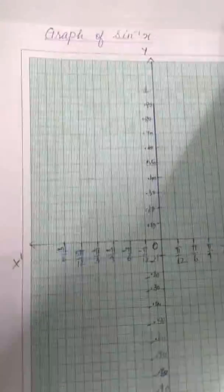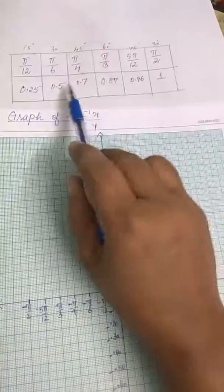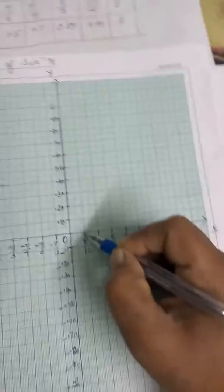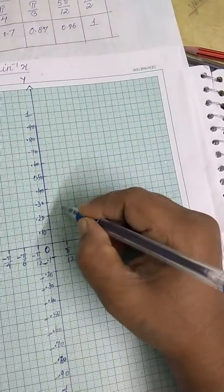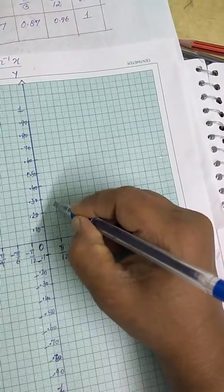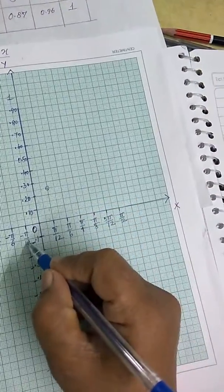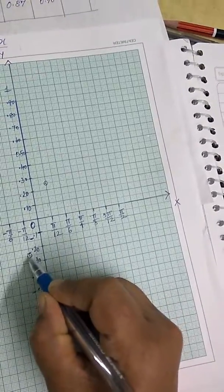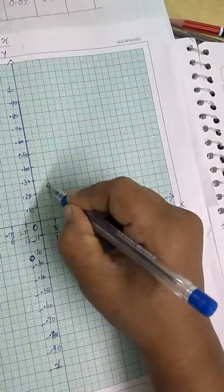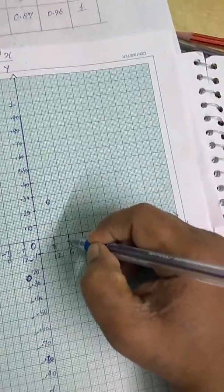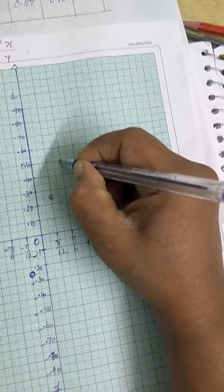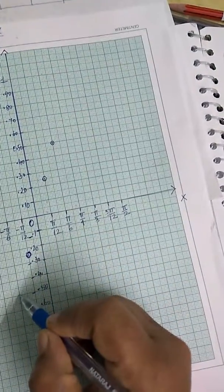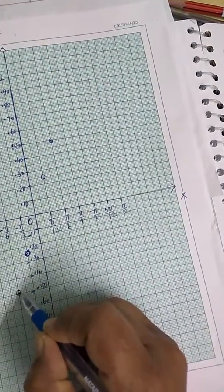Now we will plot the points. With the help of the table, you can plot the values. Pi by 12 gives 0.25, so mark the point at (pi/12, 0.25). Same way for negative pi by 12, mark at minus 0.25. Pi by 6 gives 0.5, so mark at 0.5. Minus pi by 6 will be minus 0.5, so mark minus 0.5.